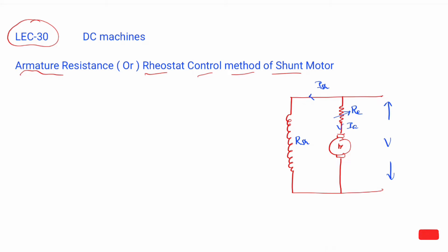With field control method we cannot disturb the flux — that is the flux control method, where field flux and speed are related. But here, in armature resistance speed control, we disturb the armature circuit using resistance without disturbing the flux.